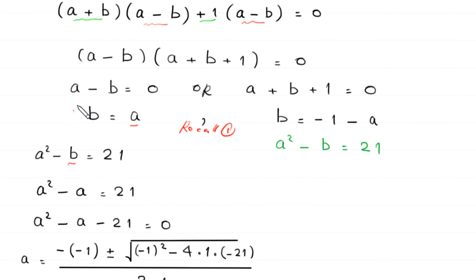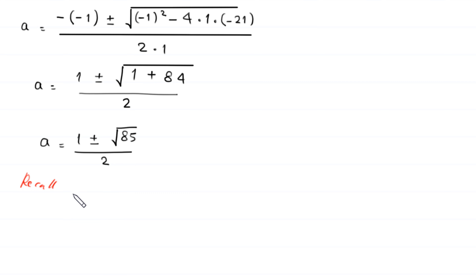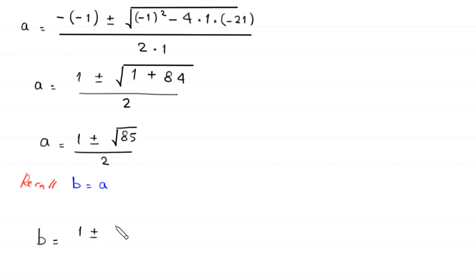Recall that b is equal to a in this case. So from case one we get the same value for b. Therefore b equals 1 plus or minus root 85 divided by 2.